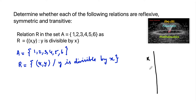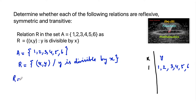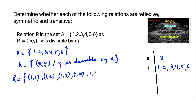The possible values of x are 1, 2, 3, 4, 5, 6. For x = 1, since y is divisible by x: 1 is divisible by 1, 2 is divisible by 1, 3 is divisible by 1, 4 is divisible by 1, 5 is divisible by 1, and 6 is also divisible by 1. So the possible ordered pairs for x = 1 are: (1,1), (1,2), (1,3), (1,4), (1,5), and (1,6).